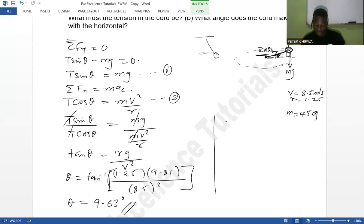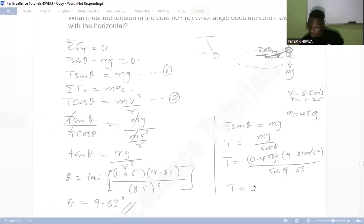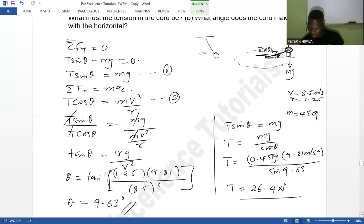Now you want the tension, you can use the first equation. So the first equation is T sin θ being equal to mg, and tension is going to be mg over sin θ. So tension is going to be the mass which is 0.45 - you always remember to have these in standard units - times 9.81 meters per second squared over sin 9.63. So the tension here is going to be 26.4 newtons. That is going to be the tension.